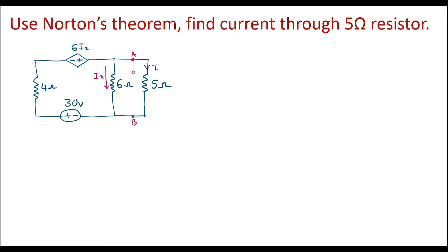To find the current through the 5 ohm resistor using Norton's theorem, three parameters we are supposed to calculate because it consists of a dependent source. That is, we need to calculate VOC, that is open circuit voltage. The second parameter is ISC, that is short circuit current. And the third parameter is Norton's resistance Rn.